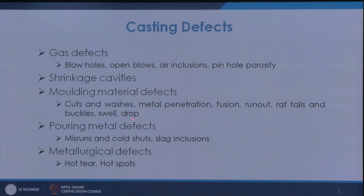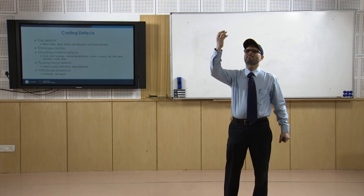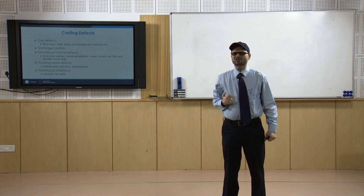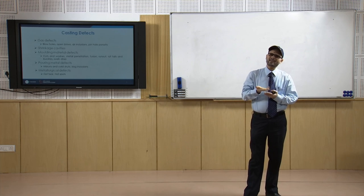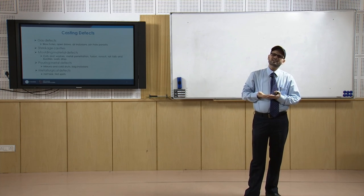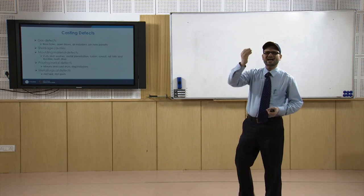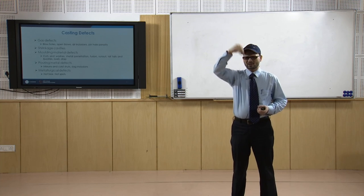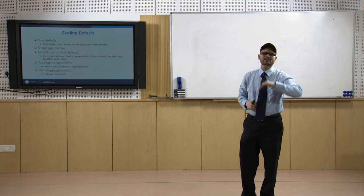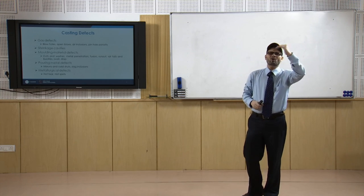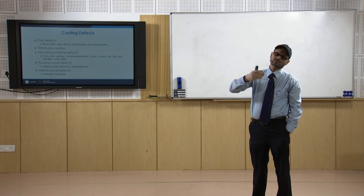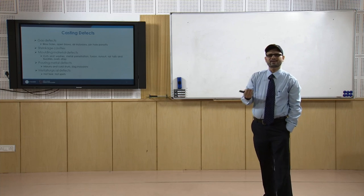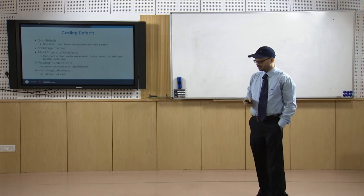Drop is basically when some sand particle from the cope portion falls on the surface of the casting. If there is improper ramming of sand in the cope portion, sand from the cope falls into the casting and floats on the surface — that is known as drop. The remedy is proper ramming of the cope portion.